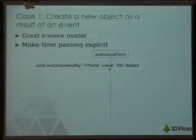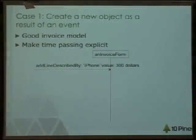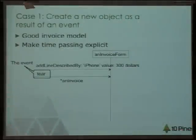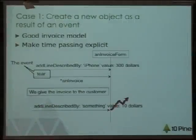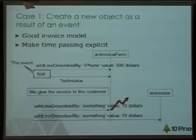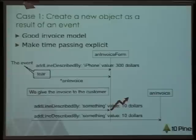A good solution, from my point of view, would be to have two different objects: one to represent the invoice form — like a builder — that is the one you can change. Then you say: I'm taking out the invoice from the form. After that, you create the invoice, and the form can no longer change. Of course, the invoice won't answer setter messages because it's an immutable object — it cannot change.